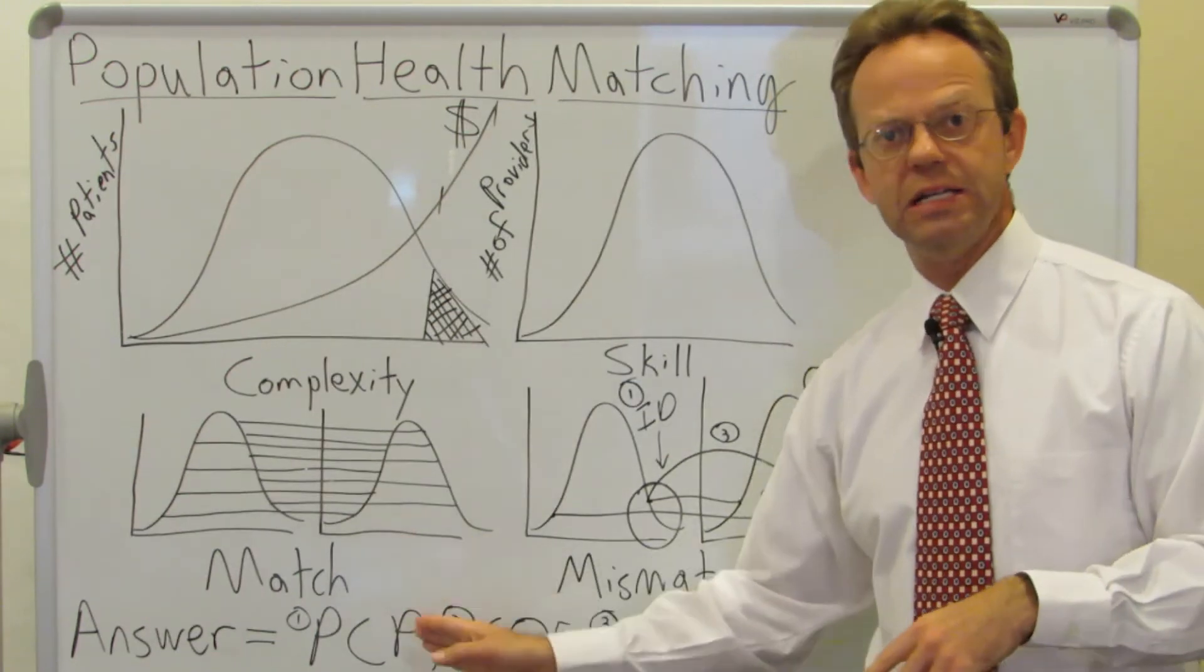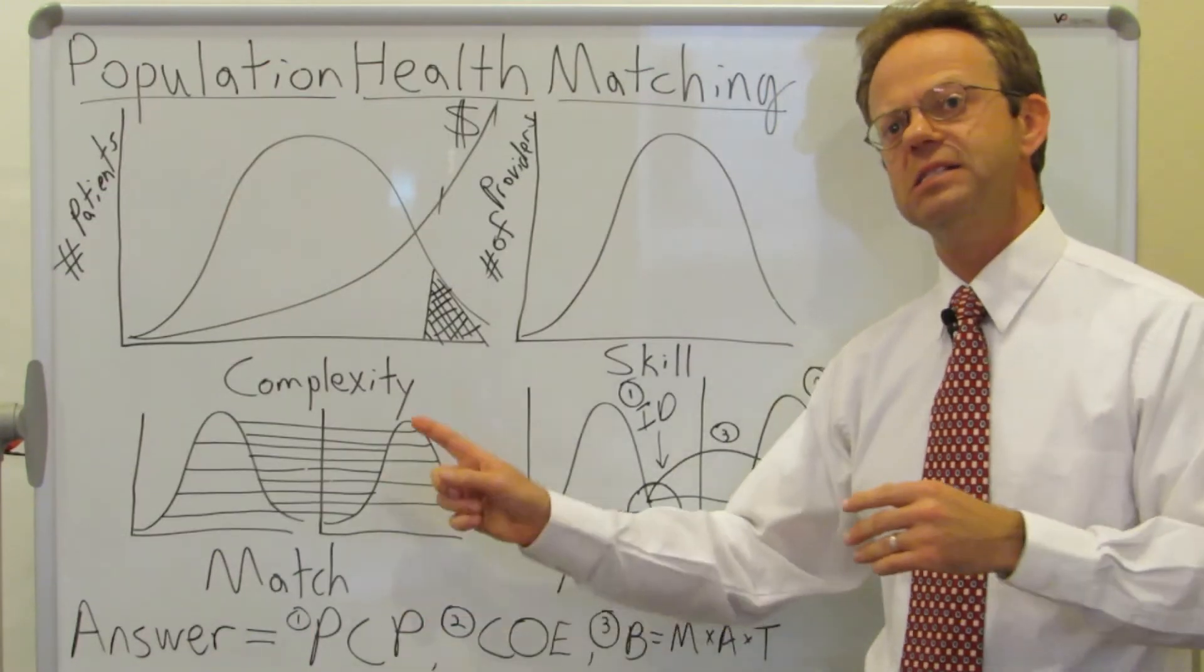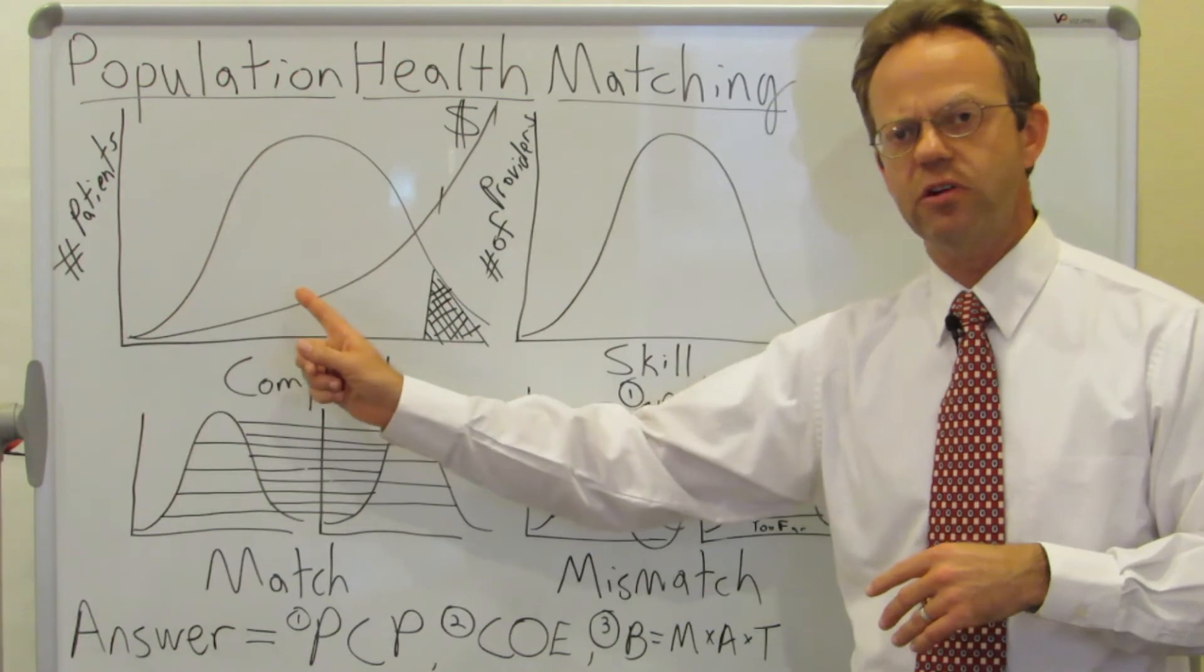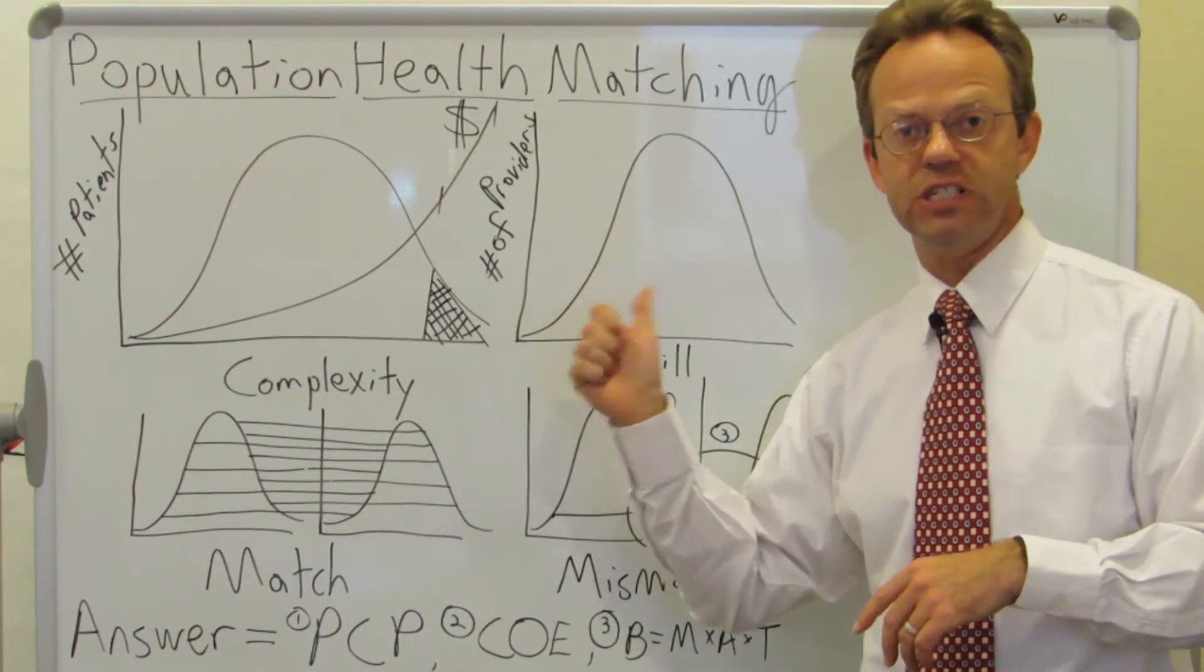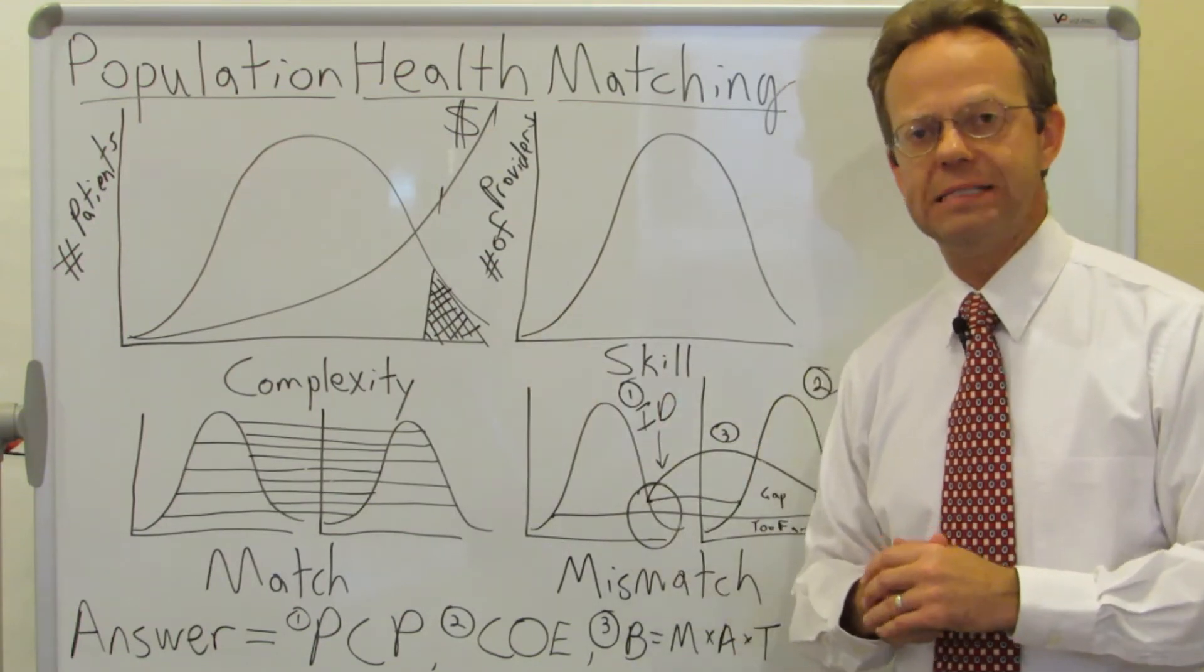So that's number one. Number two is COE, which is centers of excellence. That is to say, hey, look, for those 17 percenters that are very complex, we absolutely need to get them to the most highly skilled physicians. And then lastly, you actually have to get them there.